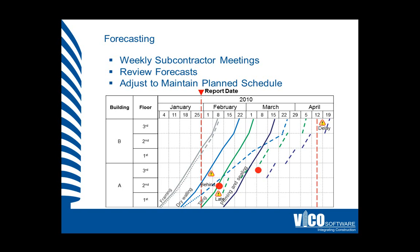Based on the actualized data and the report date, we can start to trend into the future. What we are seeing in this forecasted delay is that the grey line of framing has continued slightly late and more or less requires the production rate to complete on time. However, the drywalling task is being completed slower than planned, and as we can see, it is impacting the forecast and the commencement of continuous work for the tiling and priming and sealing tasks.